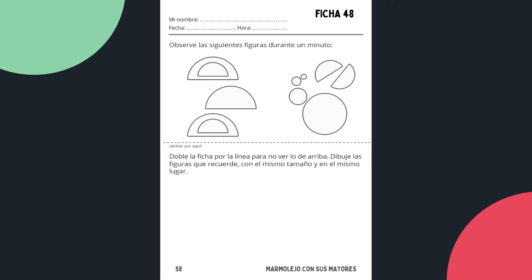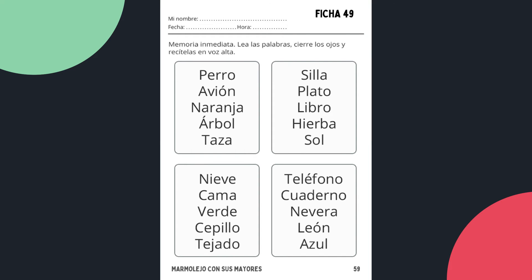Aquí vamos a ver unas fichas para ejercitar la memoria. Aparecen unos dibujos durante un tiempo determinado; hay que observarlos, luego doblar la ficha por la mitad y dibujar los dibujos que recordemos. En la ficha número 49, recitamos las palabras que aparecen en los recuadros: perro, avión, naranja, árbol, taza, y luego intentamos recordarlas.